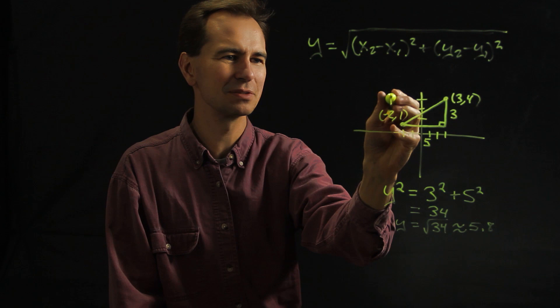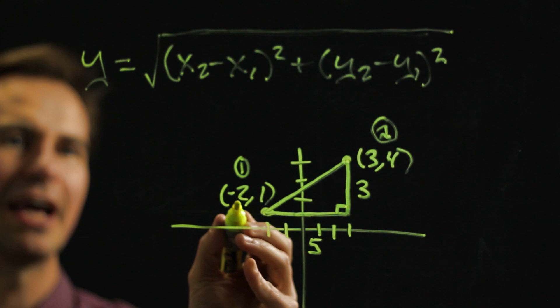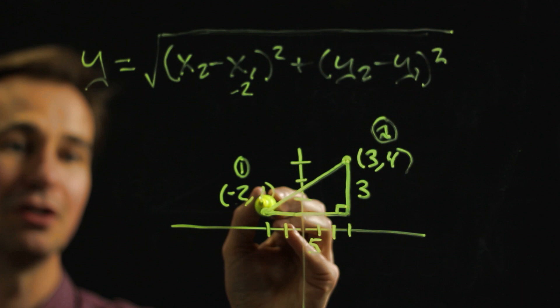We call one of these points point one and the other point two. So negative two would be our x1, so we'd stick a negative two there. The number one would be our y1, so we'd put a one there.